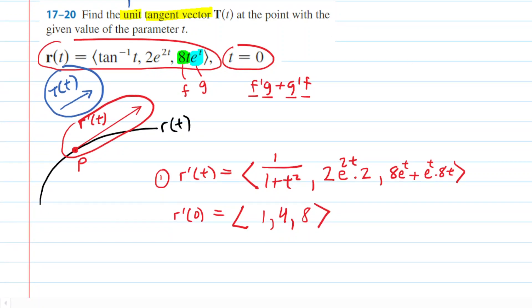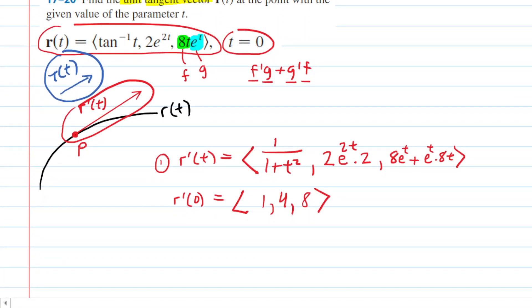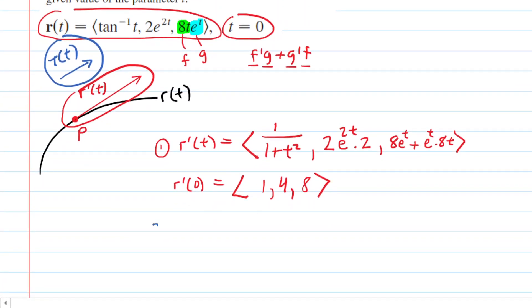It's time to convert it into the unit tangent vector. Now you probably learned in an earlier section that to take any vector and change it to a unit vector, all you need to do is take the vector, so r prime of 0, and divide that by the magnitude of r prime of 0. So this is how we're going to find the unit tangent vector, symbolized by capital T. So here we go.